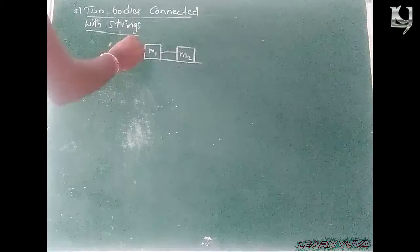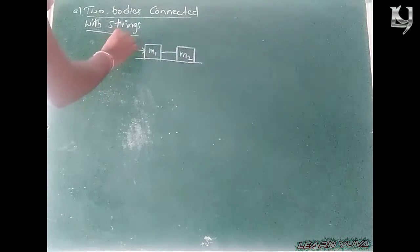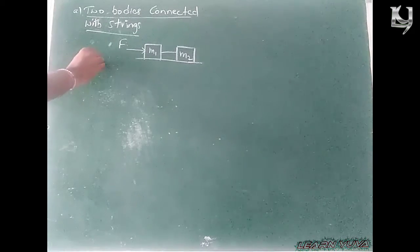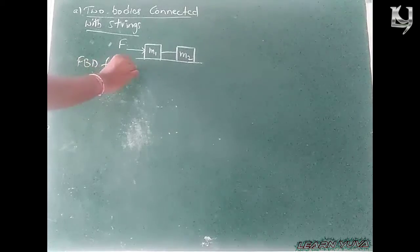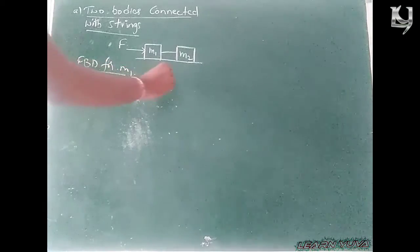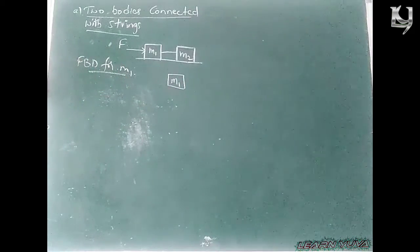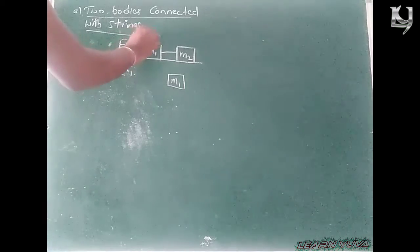First, three bodies connected with the force applied on M1. Free body diagram for M1: since the force is applied on M1, the acceleration is also towards M1 and towards F.